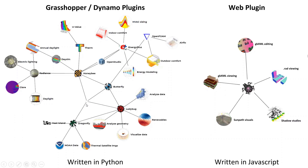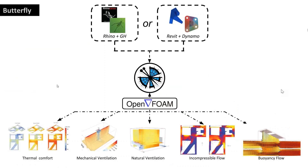We have CAD software — computer-aided design software such as Rhino/Grasshopper or Revit/Dynamo. By use of these plugins we are going to connect the CAD software to simulation engines like OpenStudio, OpenFOAM, or EnergyPlus. Butterfly specifically works with OpenFOAM and helps us analyze thermal comfort, mechanical ventilation, natural ventilation, incompressible flow, and buoyancy flow.